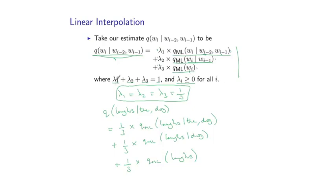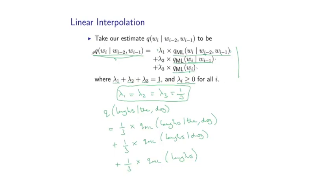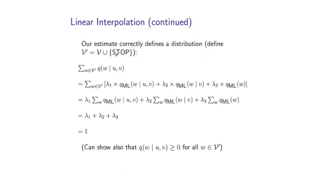Shortly we'll see how we can actually estimate these lambda parameters, again using some data. But first I want to show you an important point, which is that this parameter estimate Q is in fact a valid estimate. It's important to verify that our estimate correctly defines a distribution. And by this I mean the following. Define V' to be the vocabulary together with the stop symbol. And now for any UV bigram we're conditioning on, we want to make sure that if we sum over all words W in V', we have something that sums to 1. And that's fairly simple to show.